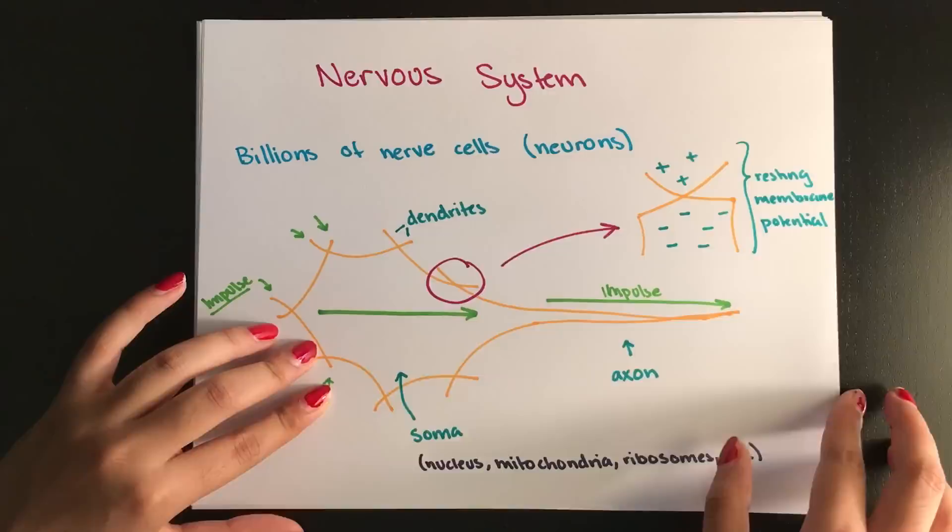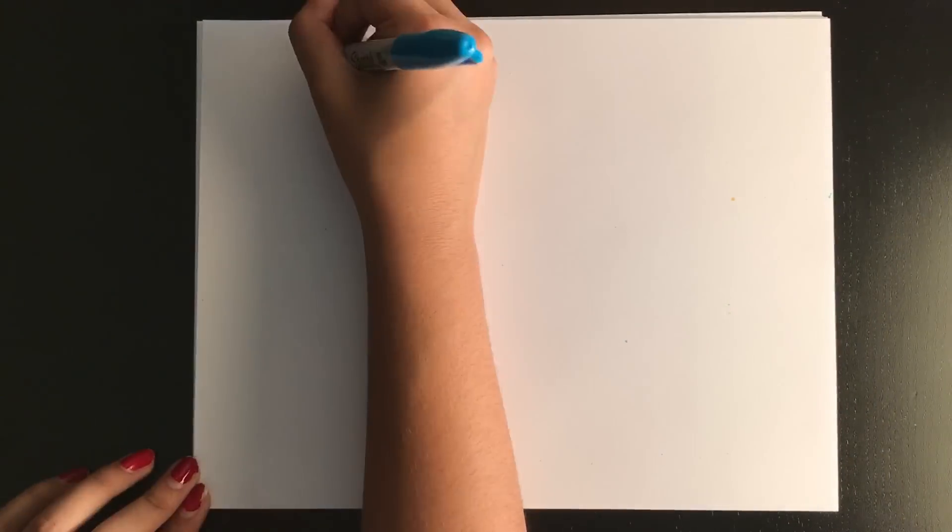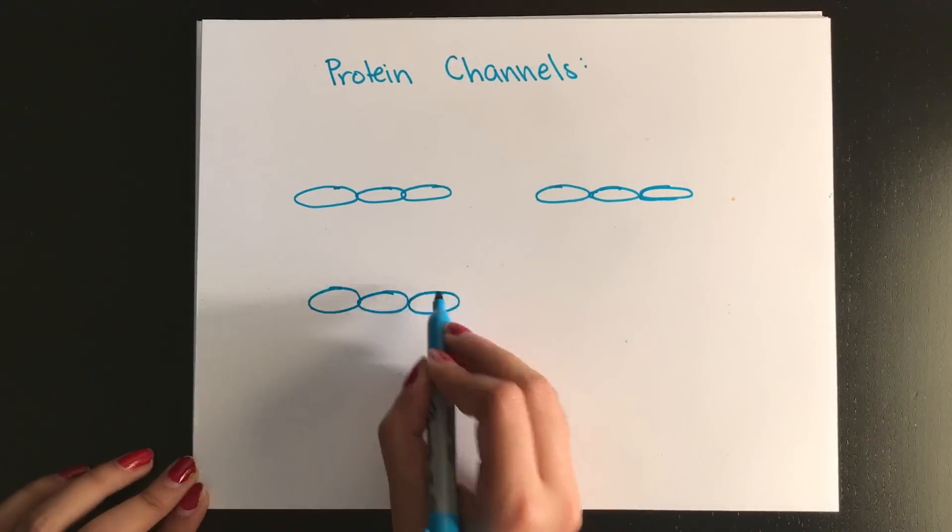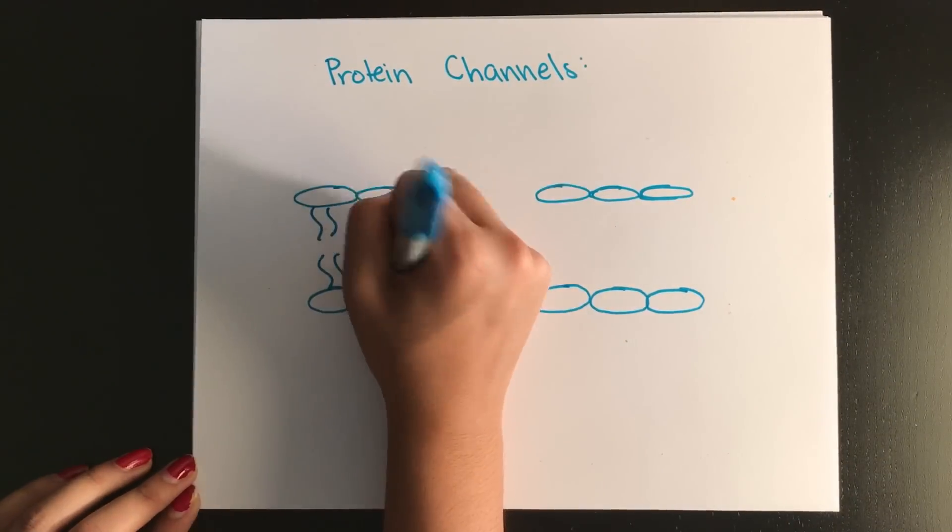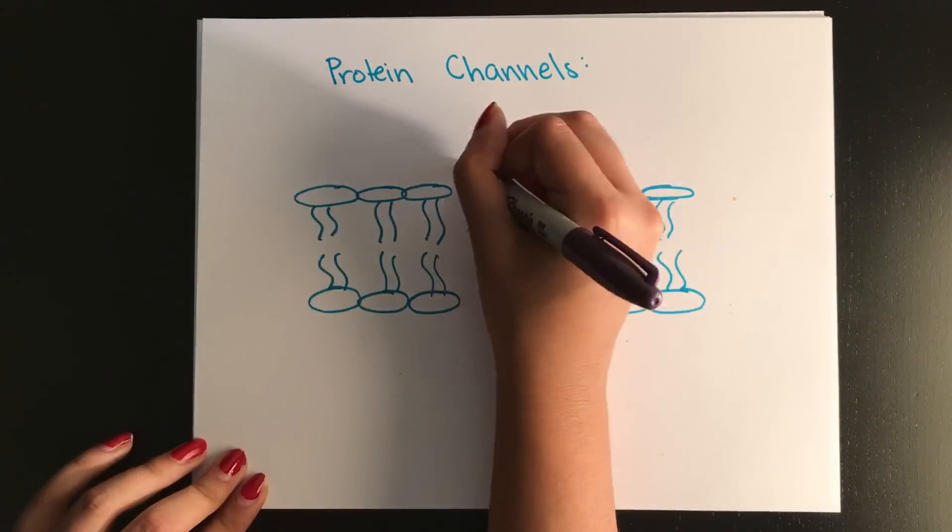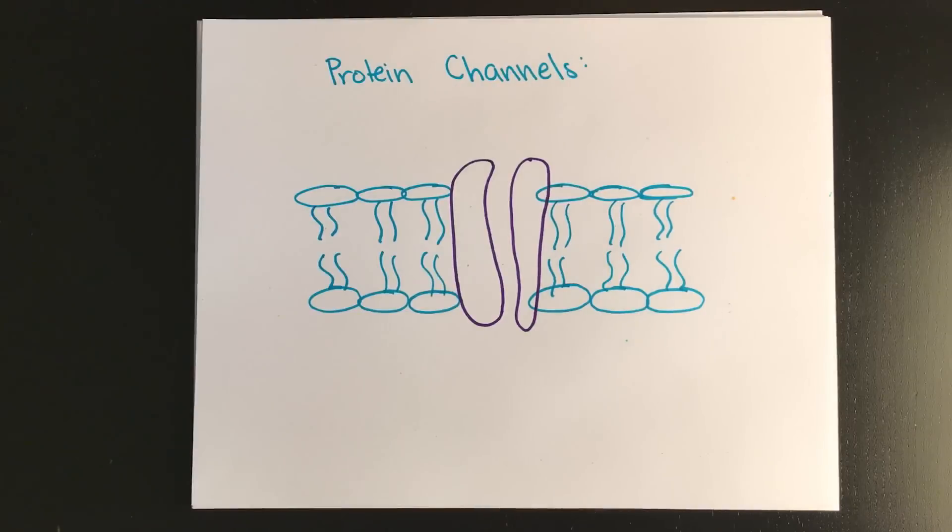So we're going to get into the chemistry a little bit of it. Protein channels within the cell membranes of neurons help create this concentration gradient because they're involved in active and passive diffusion. And they, in our cases, act as pumps and actively transport sodium out of the cell.